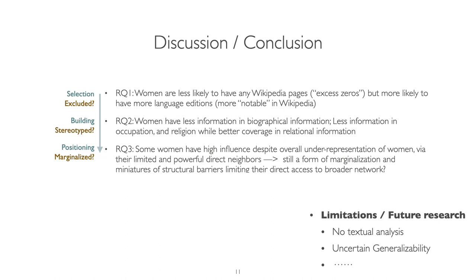In conclusion, we know women are less likely to have any Wikipedia pages, but more likely to have more language editions. We know women have less information in biographical information — less information in occupation and religion — while better coverage in relational information like spouse or children. For positioning, we noticed that some women have high influence while they have limited but powerful direct neighbors. We argue it's still a form of marginalization and a structural barrier limiting their direct access to the broader network.